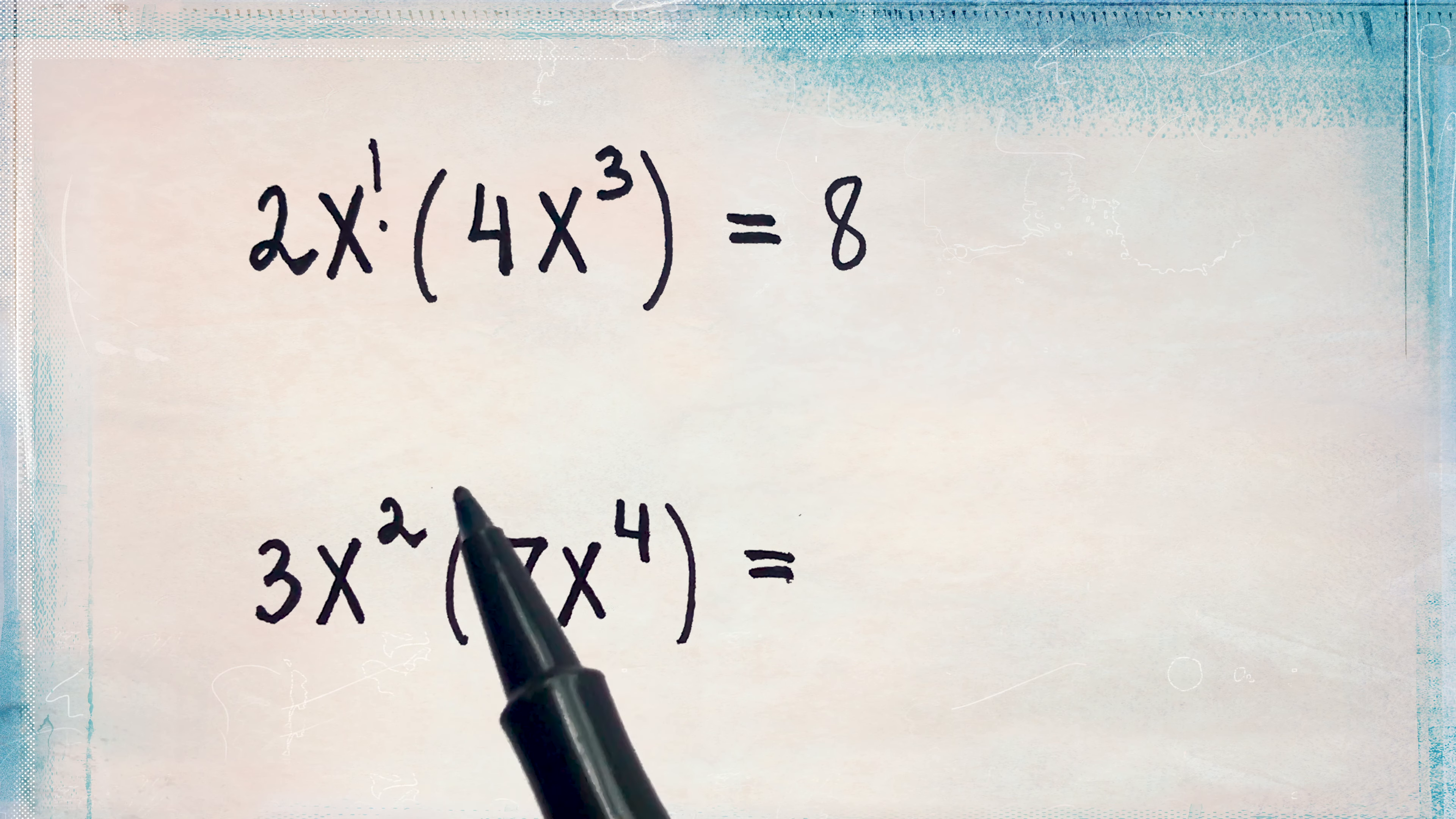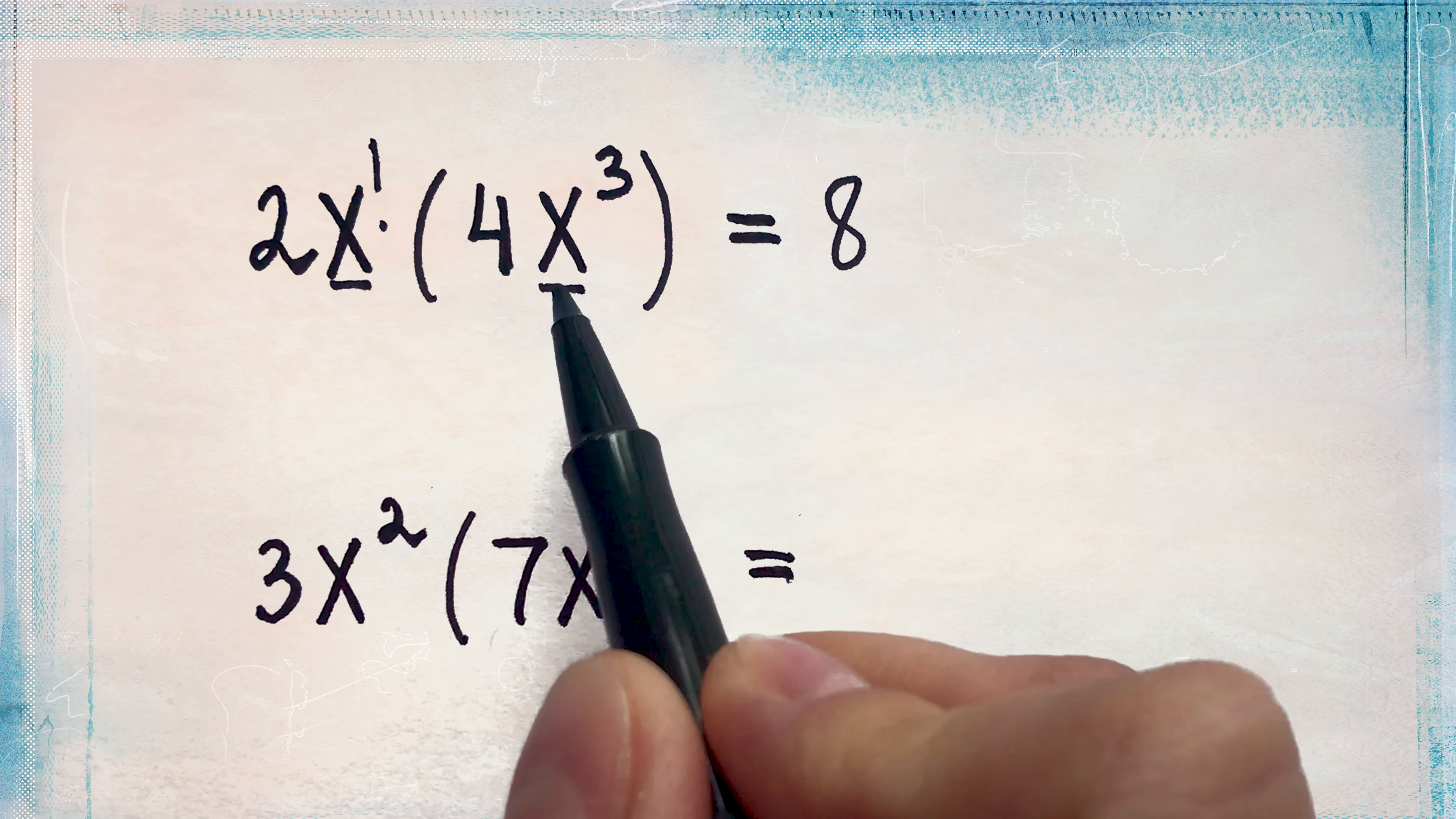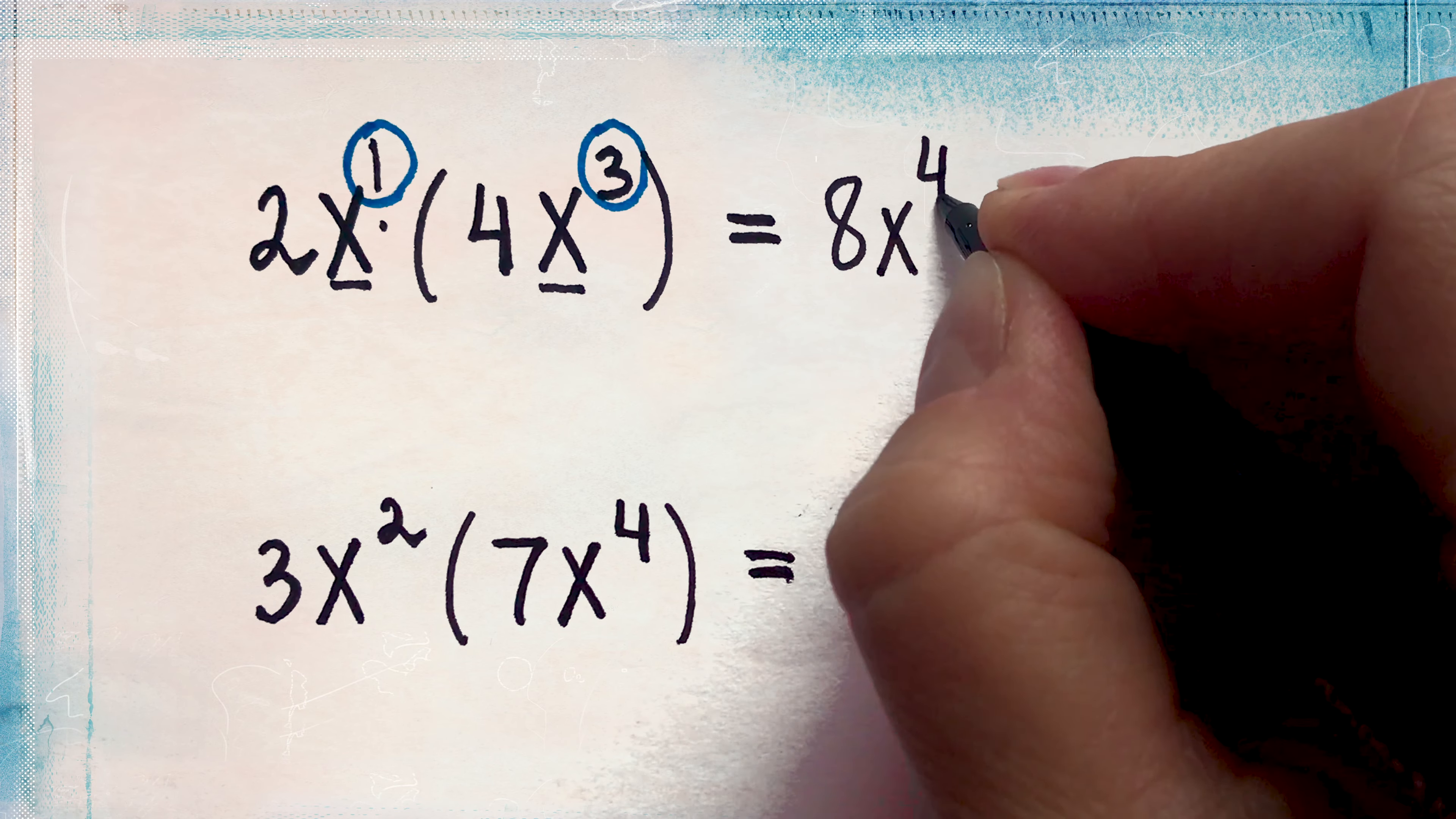Let's multiply the x's together. x to the power of 1 has the base x. x to the power of 3 has the base x. Since the bases are the same, we will add the exponent. So 1 plus 3 is 4. So we will have x to the power of 4.